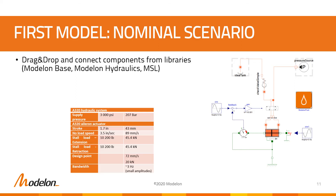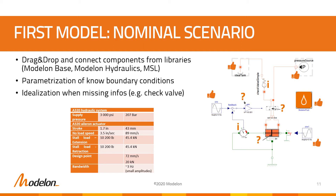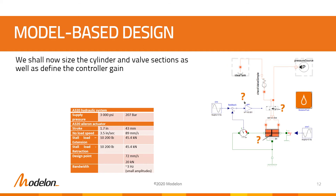From literature, we extracted a relevant performance requirement for such an aileron actuator. We can now add all known parameters and boundary conditions to the system, followed by idealized behavior when missing information, based on modular judgment. For example, the check valve pressure losses are here neglected. But there is still missing information in our model; therefore, we shall now size the cylinder and valve sections as well as define the controller gain.